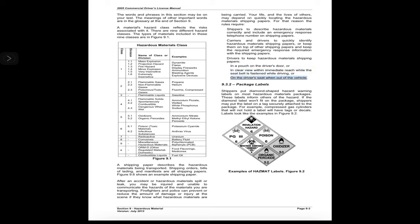Drivers must keep hazardous materials shipping papers in a pouch on the driver's door, or in clear view within immediate reach while the seat belt is fastened while driving, or on the driver's seat when out of the vehicle. 9.3.2 Package Labels: Shippers put diamond-shaped hazard warning labels on most hazardous materials packages. These labels inform others of the hazard.